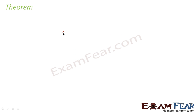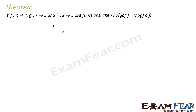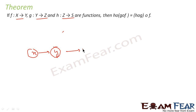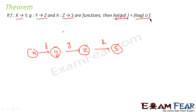Let us discuss one theorem. The theorem says: if there is a function f from X to Y, a function g from Y to Z, and a function h from Z to X, then h∘(g∘f) is equal to (h∘g)∘f. Both are the same.